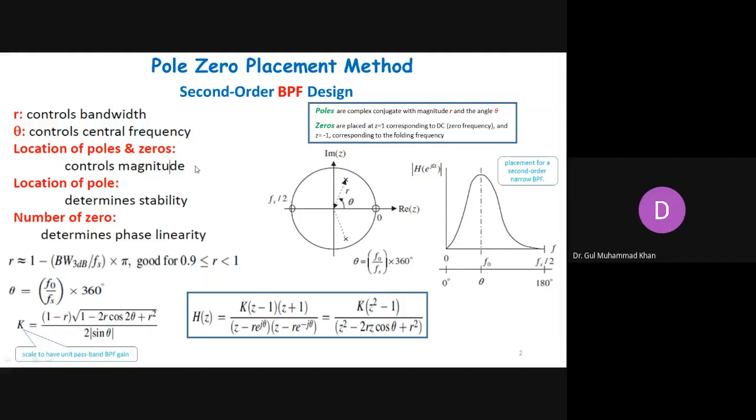Location of the poles and zeros controls the actual magnitude, how close these poles or zeros are to the unit circle. That tells you what is going to be the ultimate magnitude of this response. Also the location of the poles determines the stability. If the poles are inside the unit circle, then the system is stable. If any of the poles is outside the unit circle, the system is unstable.